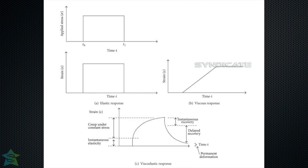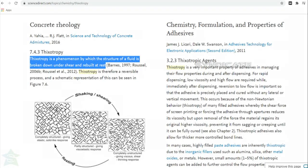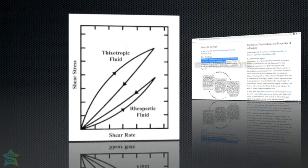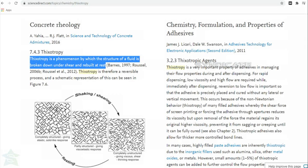This explains that bitumen is a viscoelastic material. Speaking of the time and temperature effect: when bitumen is heated at a higher temperature of 60°C, it flows rapidly in a shorter duration, but it takes more time to flow at 25°C. Bitumen also behaves as a thixotropic fluid — thixotropy is a phenomenon by which the structure of a fluid is broken down under shear and rebuilt at rest. So bitumen gets softened at higher temperature and stiffens at lower temperature.